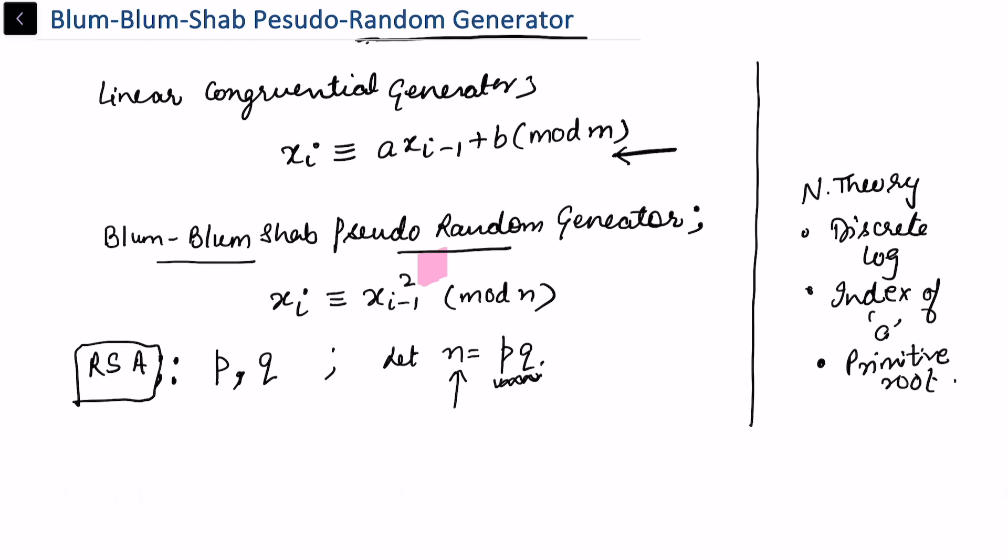q. So this factorization is also considered a hard problem. So here our seed x naught, which I will use in my Blum-Blum-Shab pseudo-random generator - seed x naught is such that the gcd of the